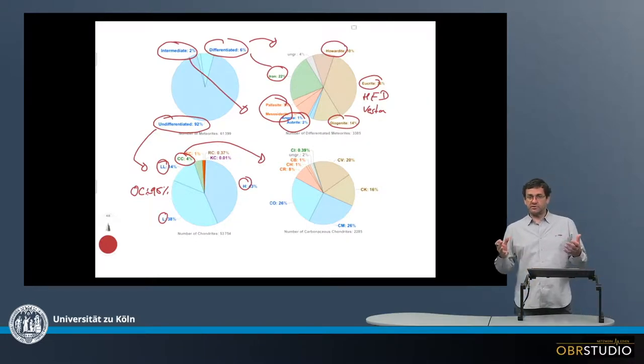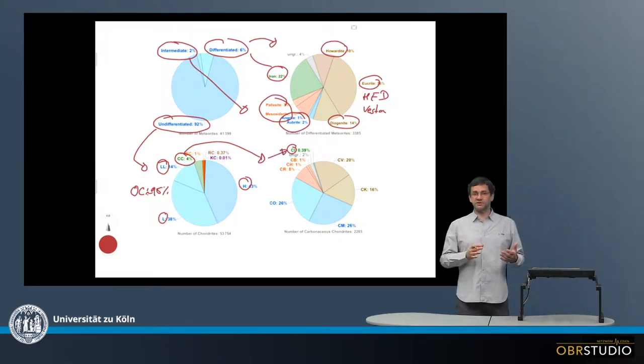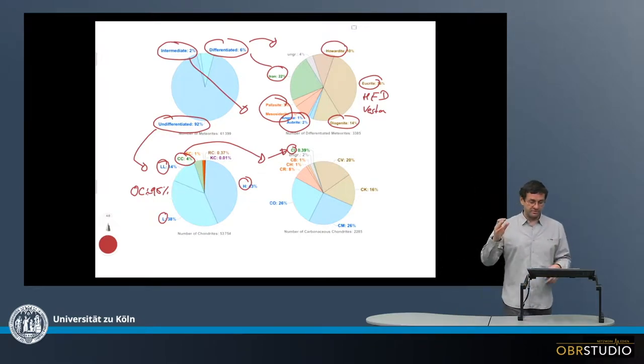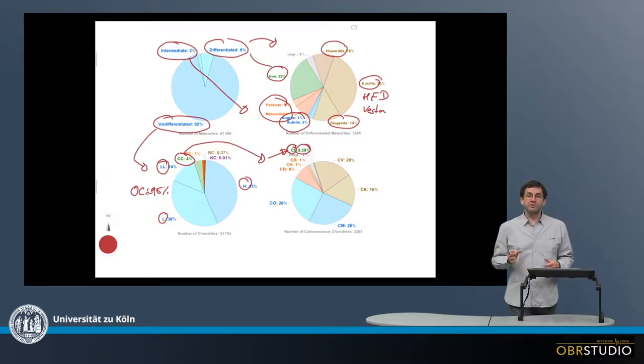And among the carbonaceous chondrites, the most important group, the most important group of this class are the CI chondrites, which have approximately the composition of the sun, except for hydrogen, helium, and volatiles, of course. But the CI chondrites, they only have a share, the smallest share actually, of about 0.4%.